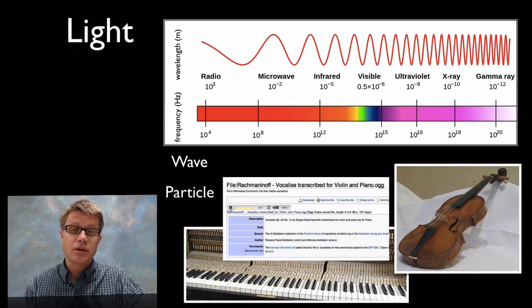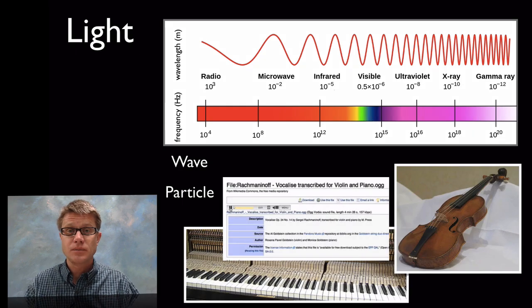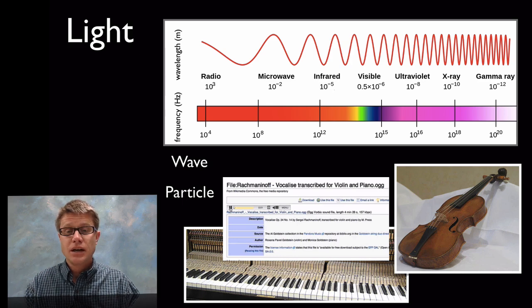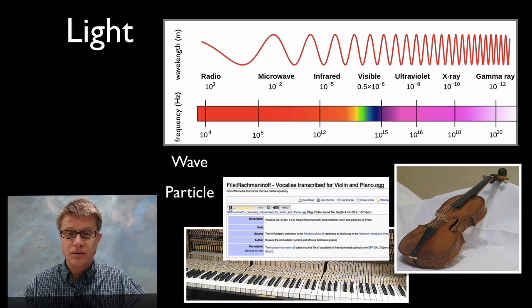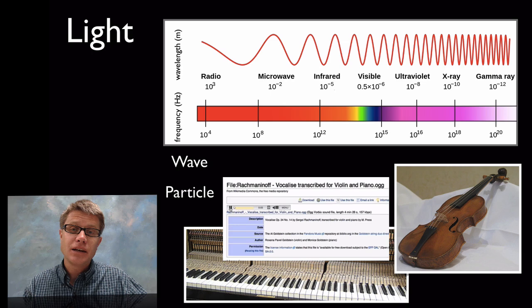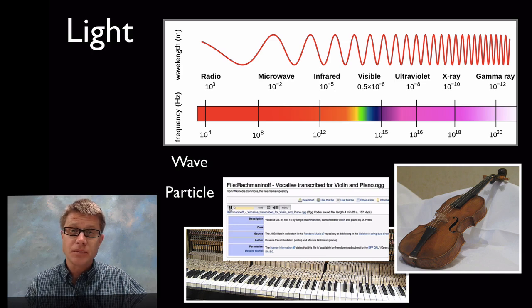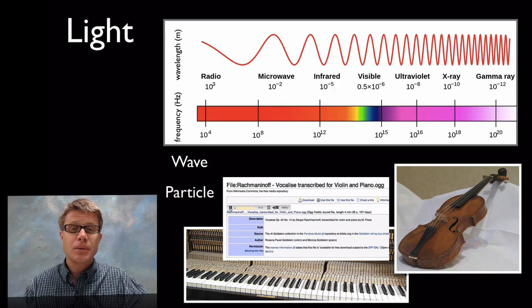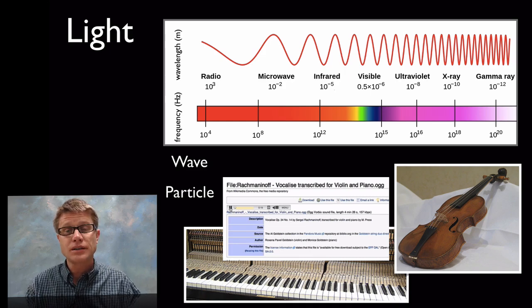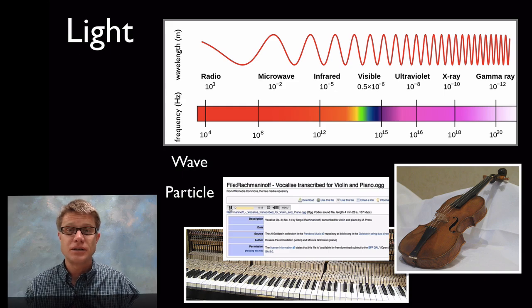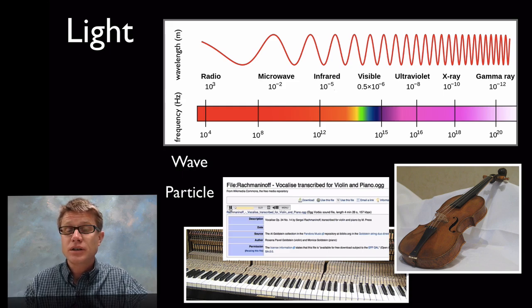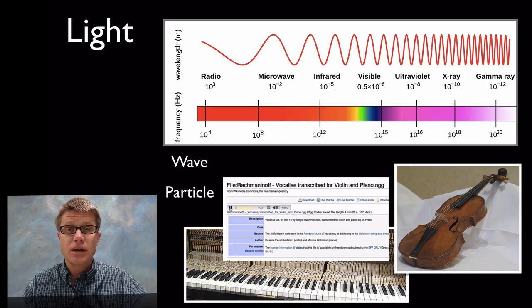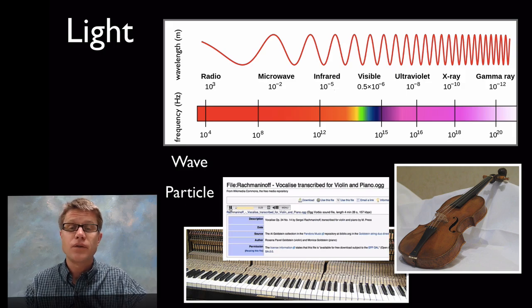Light is also a particle, which means it's quantized - it comes in small little quantities. Let me play some music in the background, Rachmaninoff for violin and piano. A violin can play any note - you just move your finger up in incremental amounts. But a piano is quantized, with specific quantities. You can only hit a C or a D or an E. Light is like a piano, it comes in these small little quantities of photons.